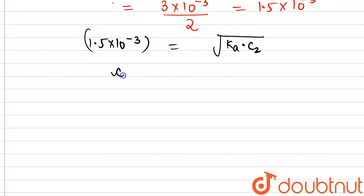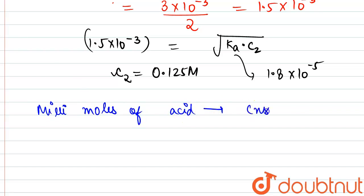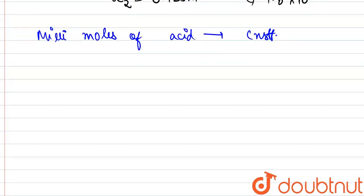From here, the c2 value comes out to be 0.125 molar. Ka again is given in the question as 1.8 × 10^-5. Now, since we have c2 with us, we can apply the fact that millimoles of acid will still remain constant.